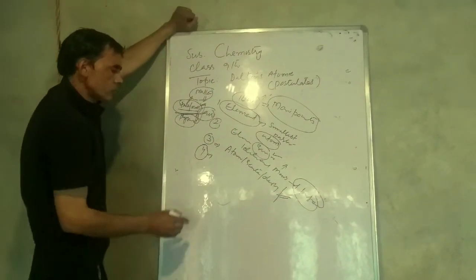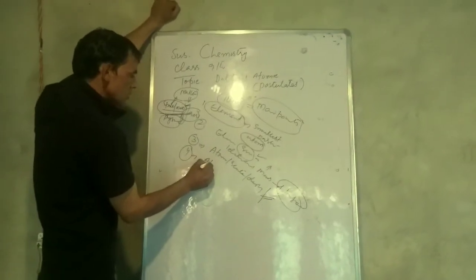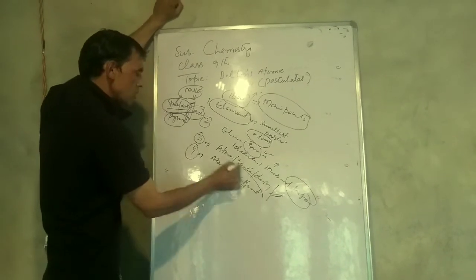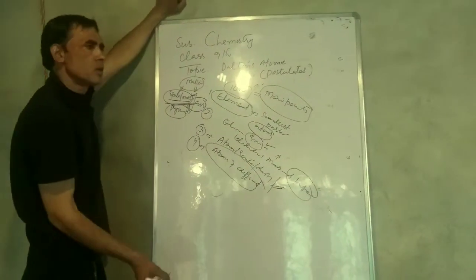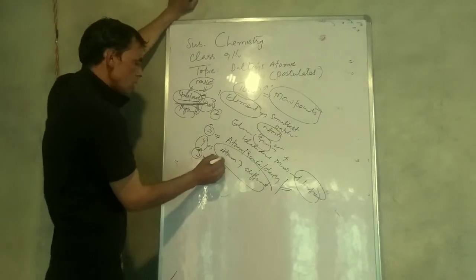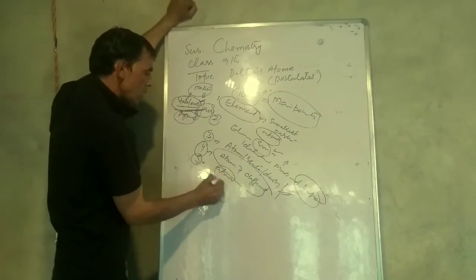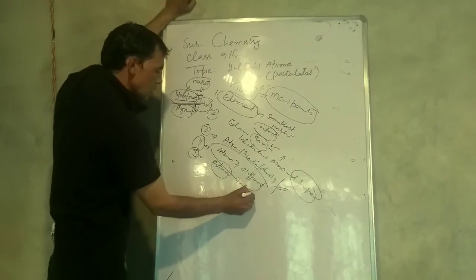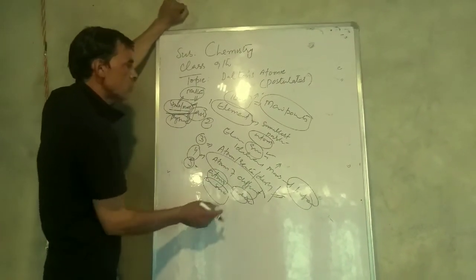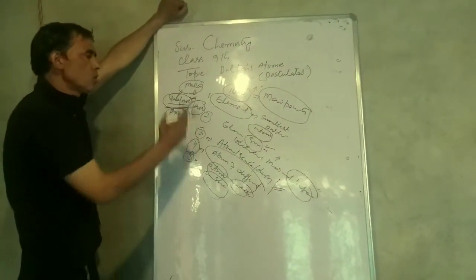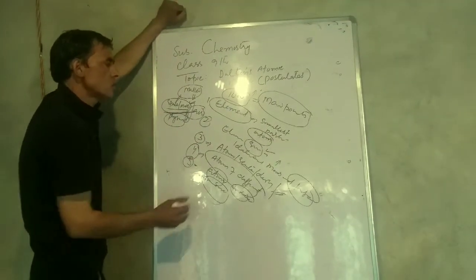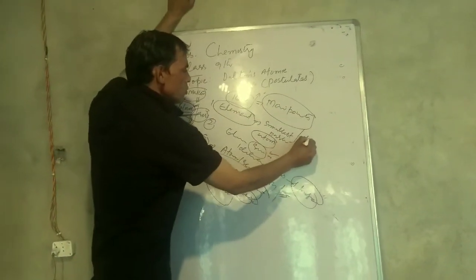Atoms combine in whole number ratios to form compounds. These are the postulates of Dalton's atomic theory. Dalton was a great scientist.